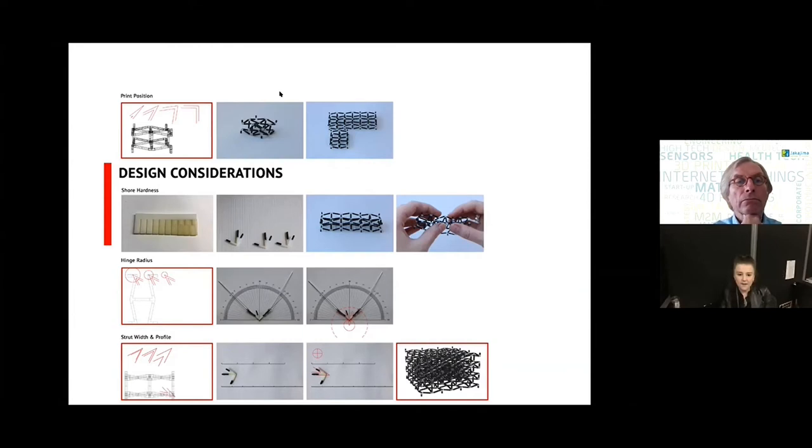That increases or decreases the rubber-like properties of the material and so that's the structure, the re-entrant hexagonal structure, exhibiting auxetic through shore hardness 20, 40, 60. Then there's the hinge radius which is how large the hinge is, the scale of the hinge in regard to the scale of the structure, and then the strut width and profile so some profiles have been printed circular and others have been printed square and then the thickness of the strut up to a maximum where it's most structurally robust but it still is exhibiting an auxetic effect.